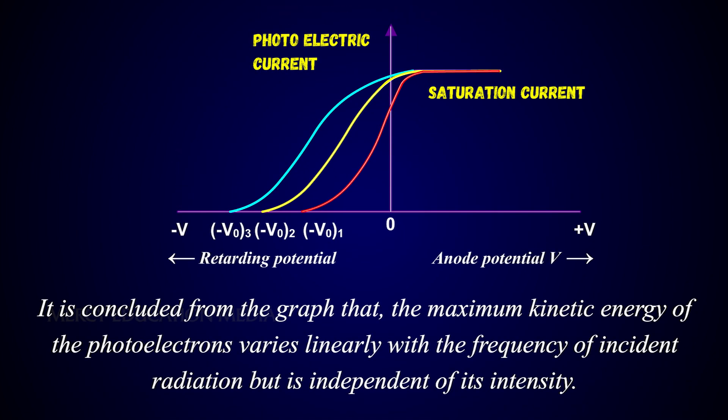It is concluded from the graph that the maximum kinetic energy of photoelectrons varies linearly with the frequency of incident radiation but is independent of its intensity.